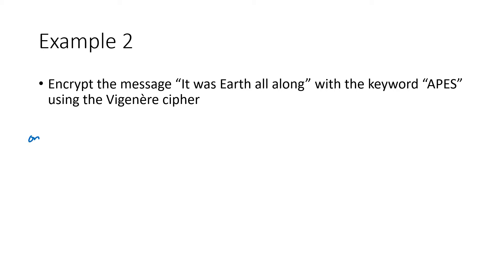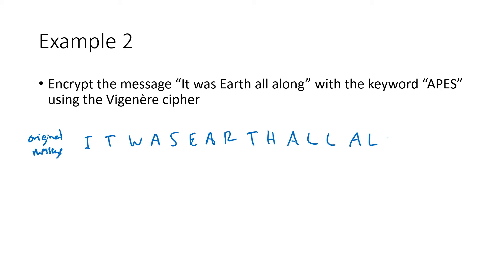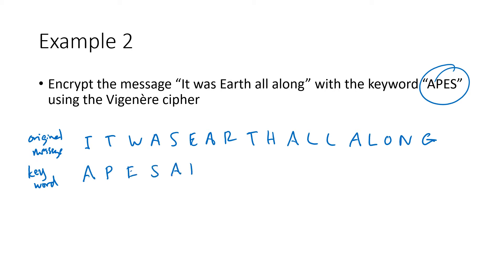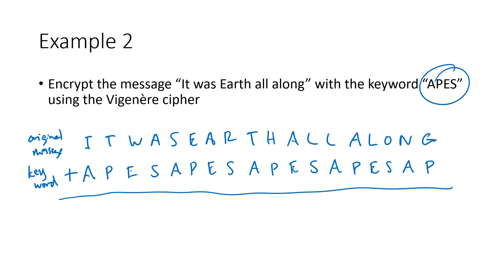First I write the original message: I-T-W-A-S-E-A-R-T-H-A-L-L-A-L-O-N-G. Then underneath that I write the keyword repeated. The keyword is 'apes': A-P-E-S, A-P-E-S, just over and over. If you get to the end and you're in the middle of your keyword, that's okay — you just stop. And now I'm going to add these letters together using the same letter arithmetic we've been talking about.